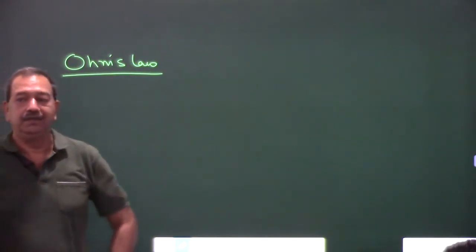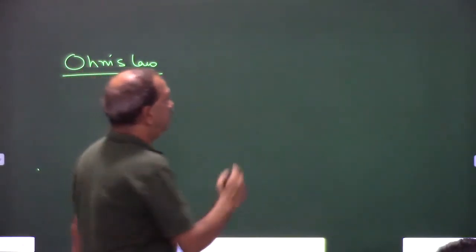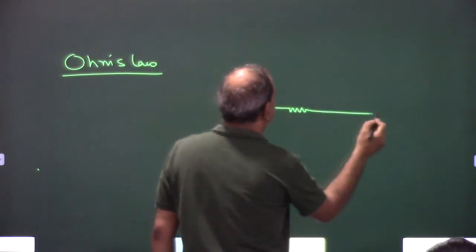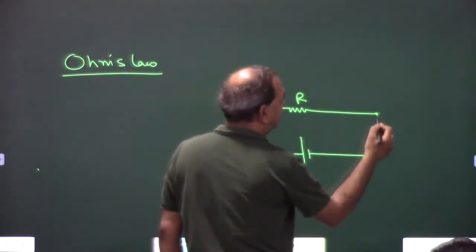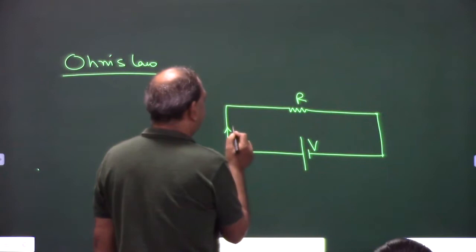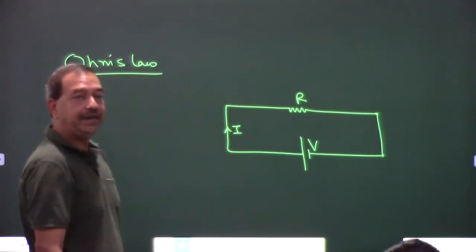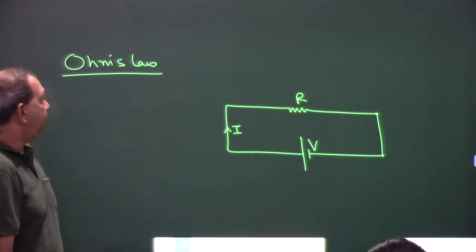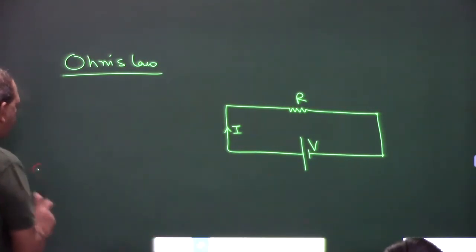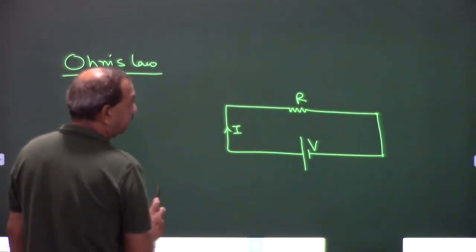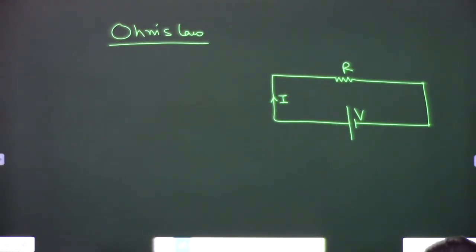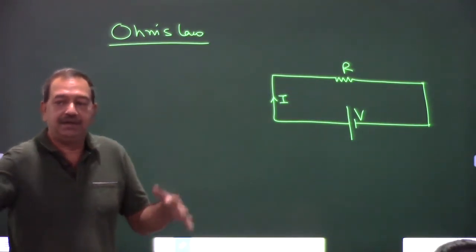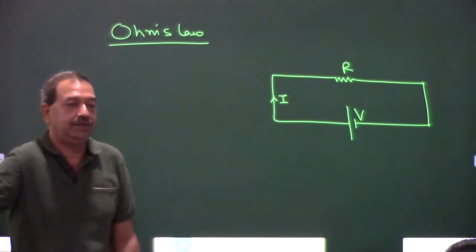Let's understand Ohm's law in a slightly conceptual way. Consider a resistance, a source of EMF, voltage V, and current I. There are two ways to represent Ohm's law. One question that comes up often: is it V proportional to I, or I proportional to V? Current in a complete electric circuit: I is directly proportional to V, with proportionality constant G — this is the conductance of the circuit.